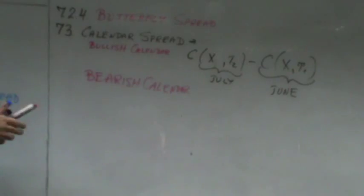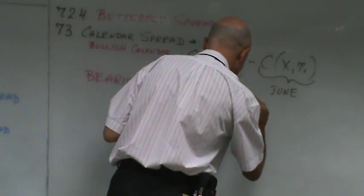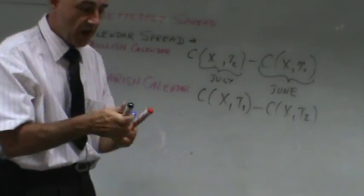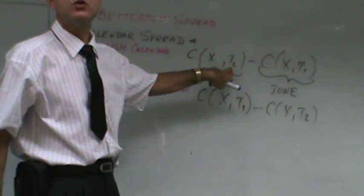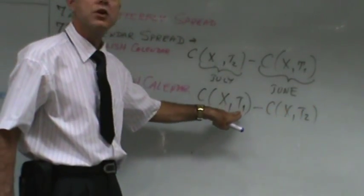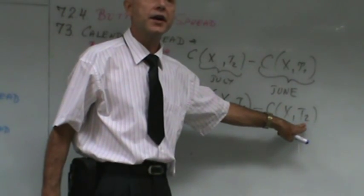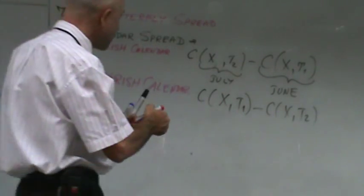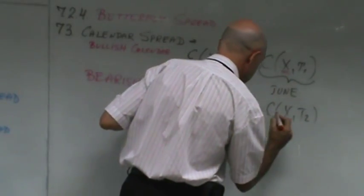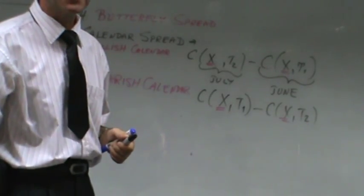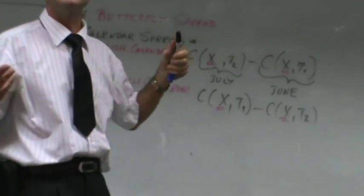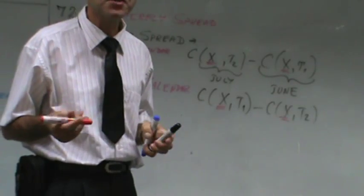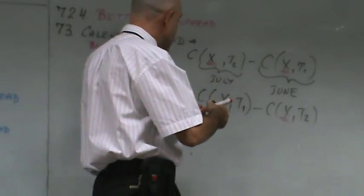The bearish one is the opposite: you go long the June call and short the July call. The strike is exactly the same for both, so all you have is a difference in time — the difference in time value. And we have a very important chart: the time value decay chart.